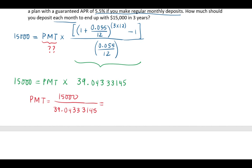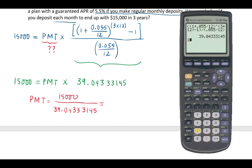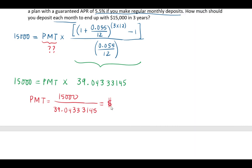So it's going to be $15,000 divided by 39.04333145. There are ways to save that number but it's fine, I did the classical direct computing. So I got 384.19. The monthly payments will be $384.19, rounded to the nearest cent.